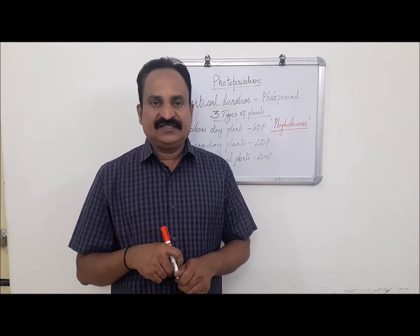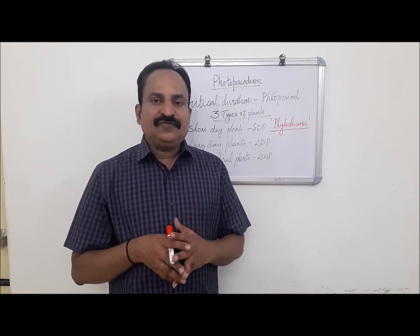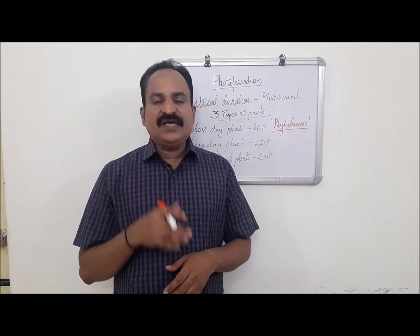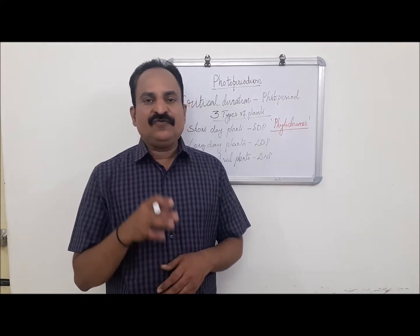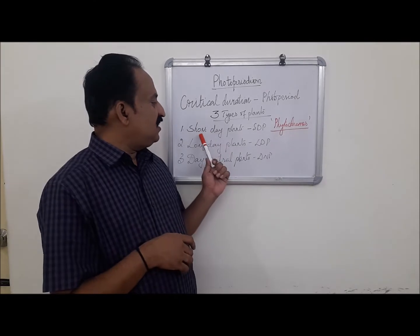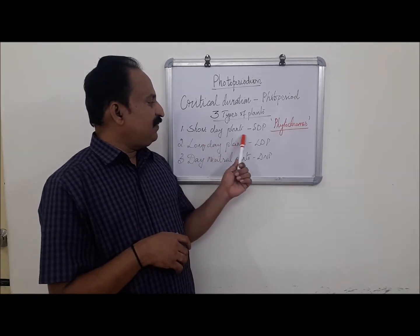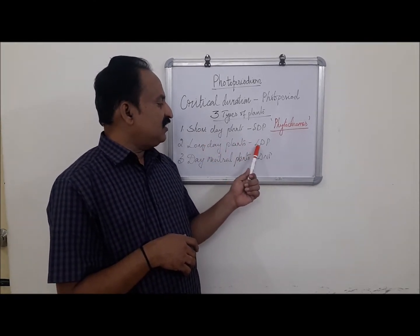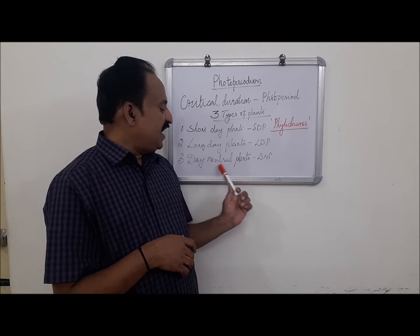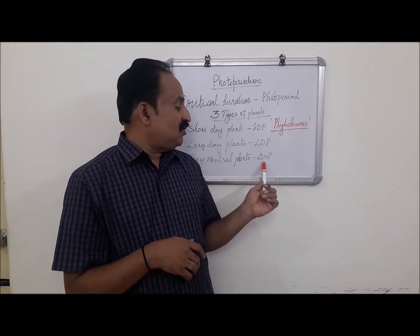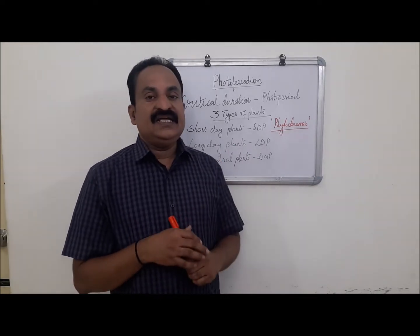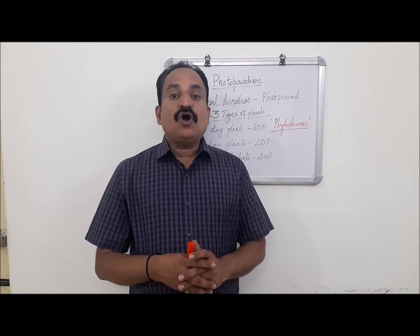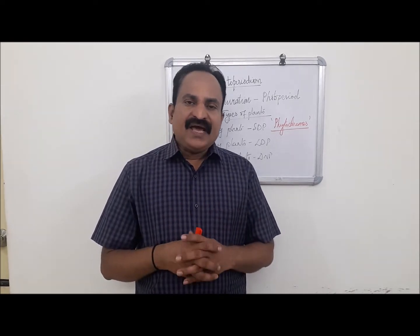According to photo periodic responses, flowering plants are of three types: short day plants (SDP), long day plants (LDP), and day neutral plants (DNP).